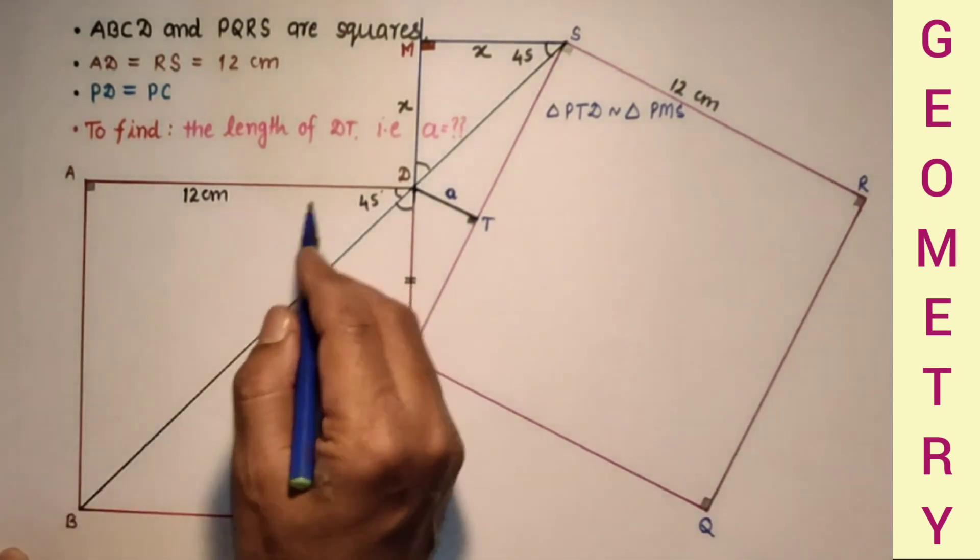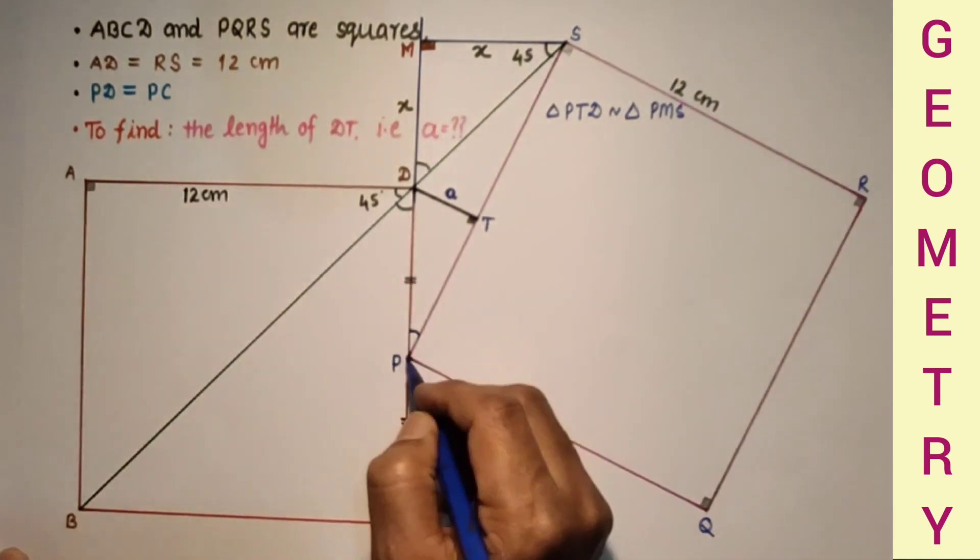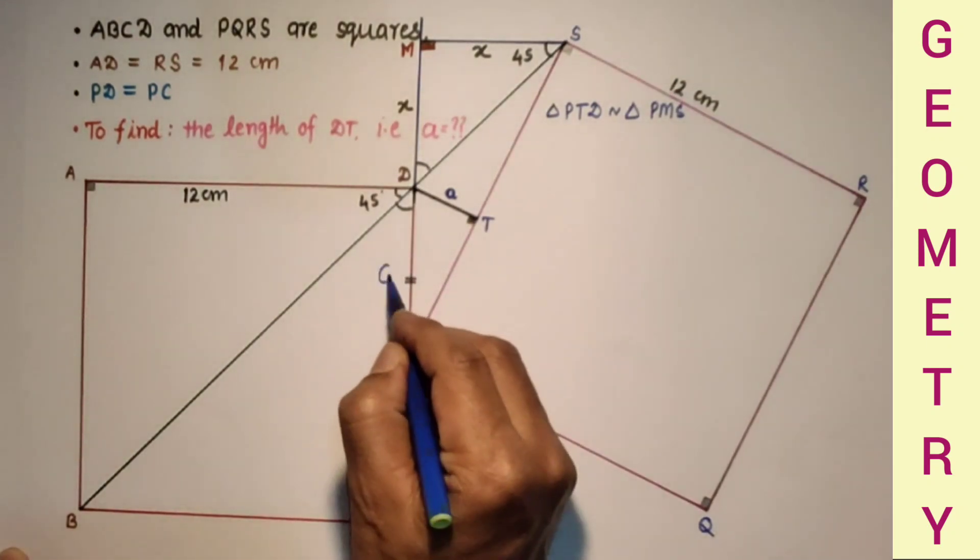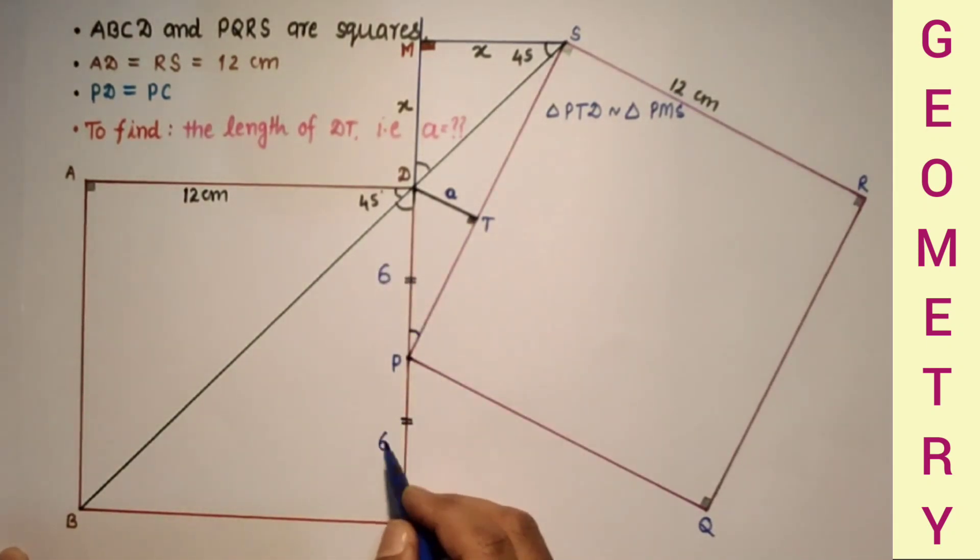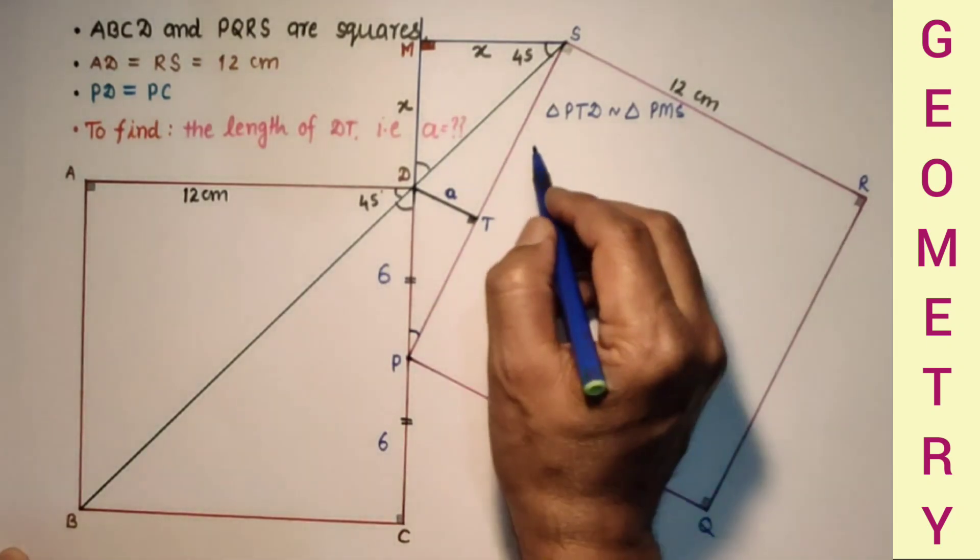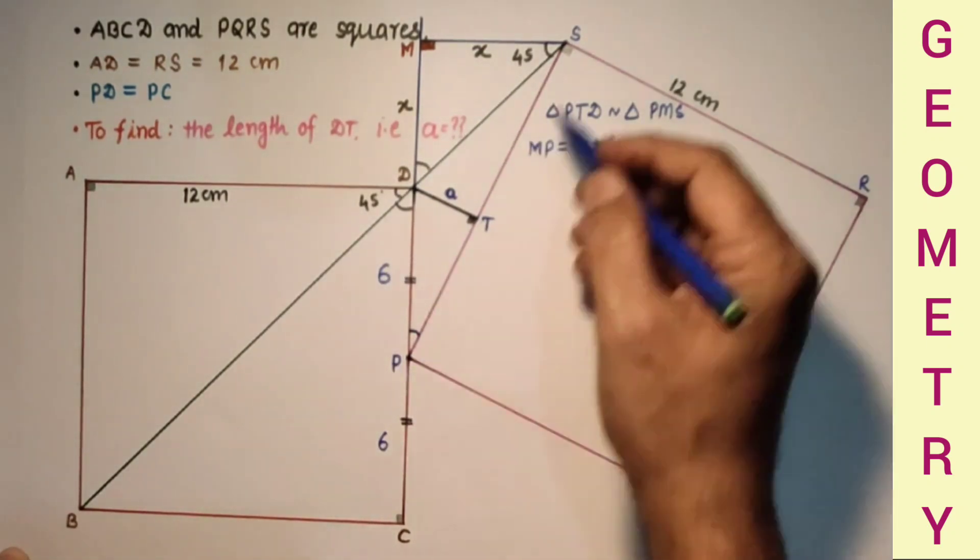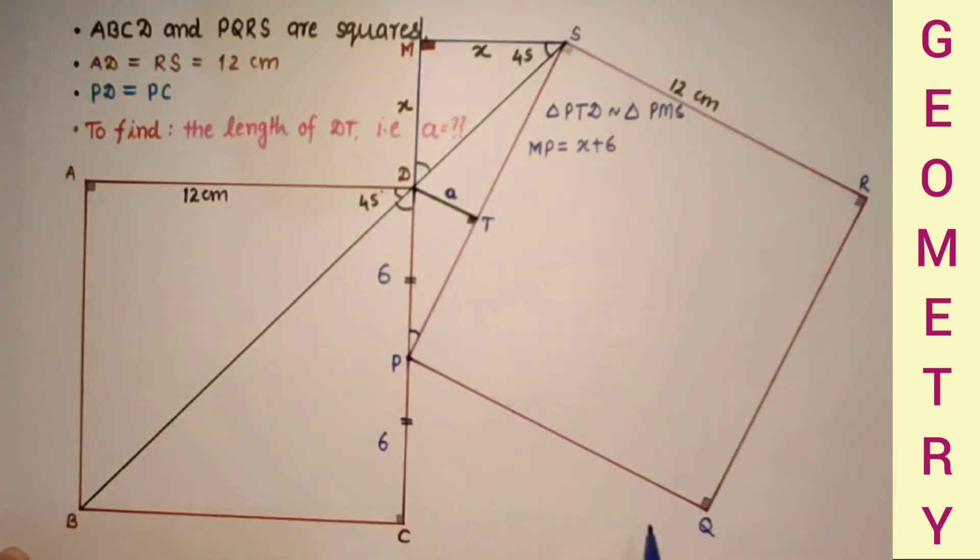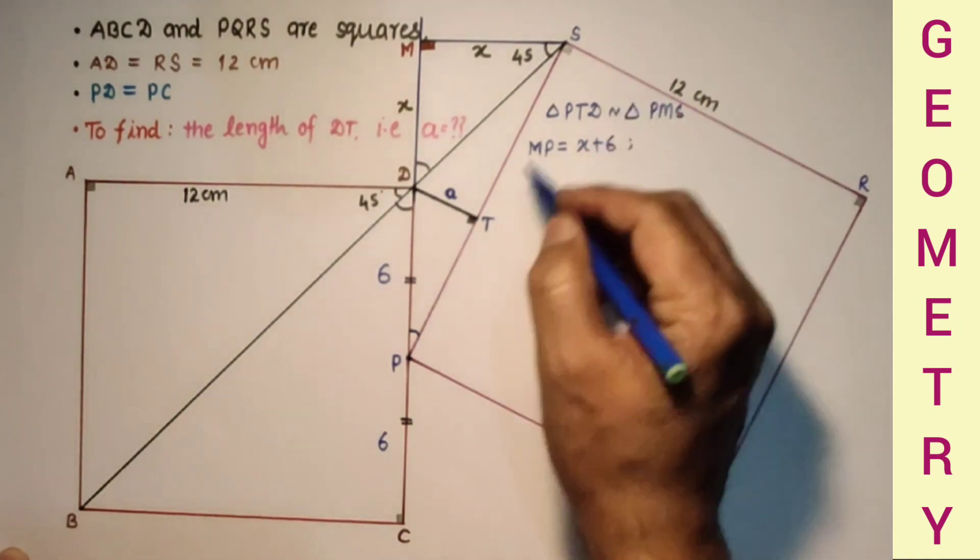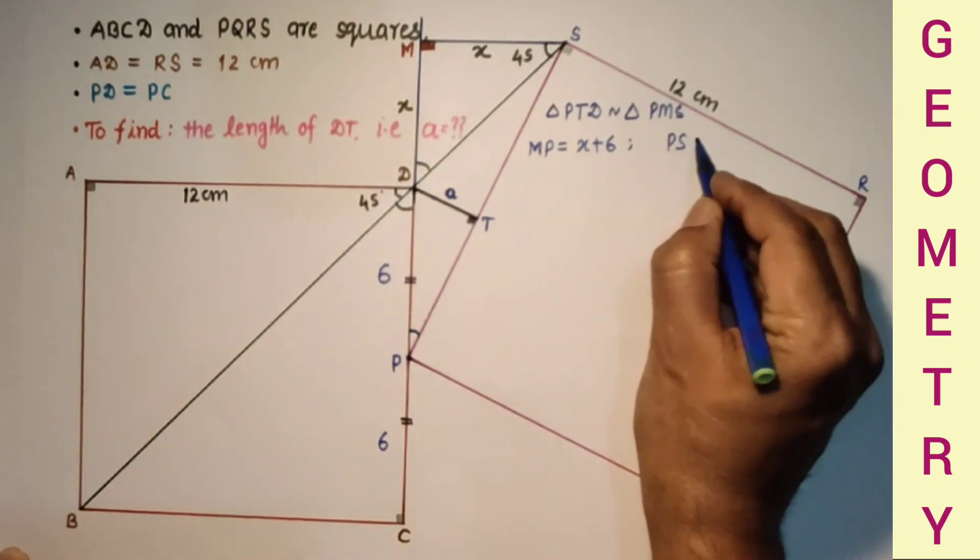Since this is 12, and this point is midpoint of DC, this length is 6 and this is also 6. So MP is equal to X plus 6. And this PS is 12 because this is the side of the square.